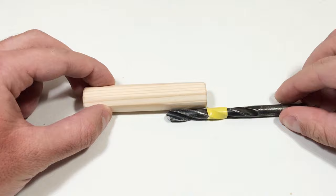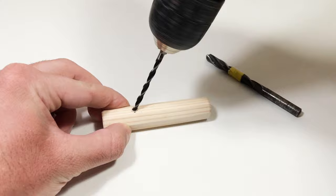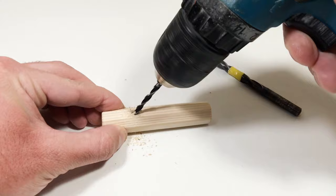Then we mark and drill small holes at an angle. Then we cut the grooves along the base.